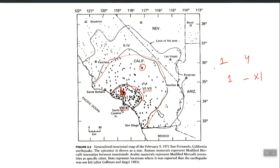Later on we developed standardized scales for quantifying the effect of earthquakes and they are called intensity scales. The most important intensity scale is MMI — the Modified Mercalli Intensity scale. An intensity scale is the description of the effect of an earthquake, and with each description a number is given. After a particular earthquake, if you have damage corresponding to a particular description, you assign that number to that location.